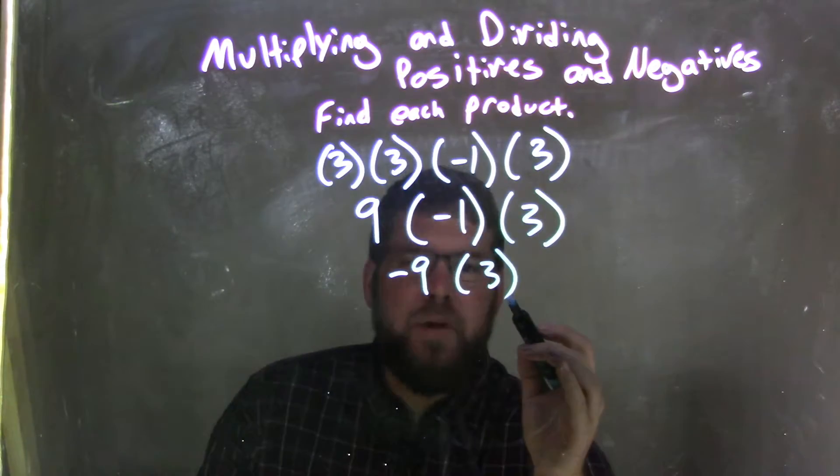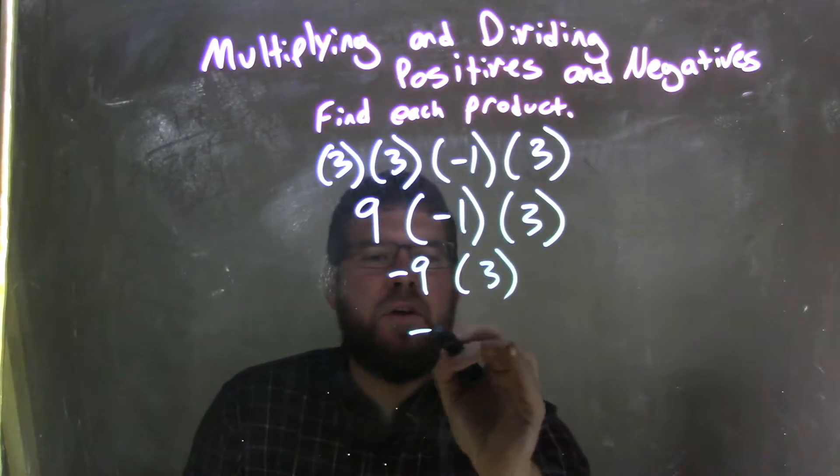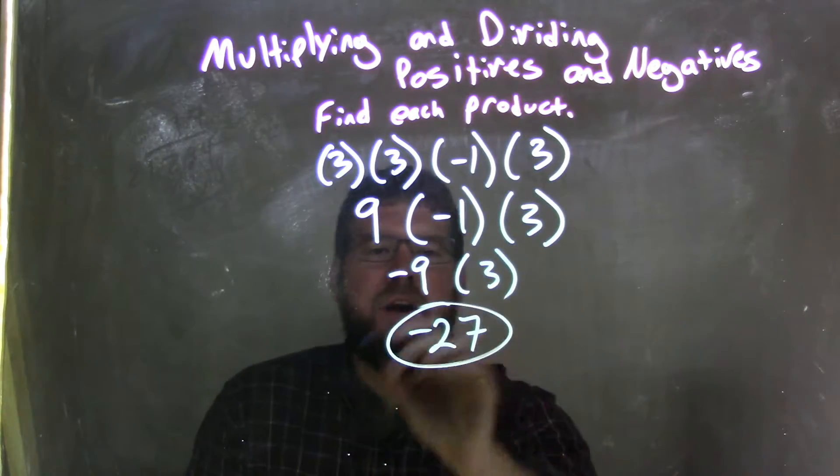Negative 9 times a positive 3 is a negative number. Negative times a positive is a negative, and it's negative 27, which is our final answer.